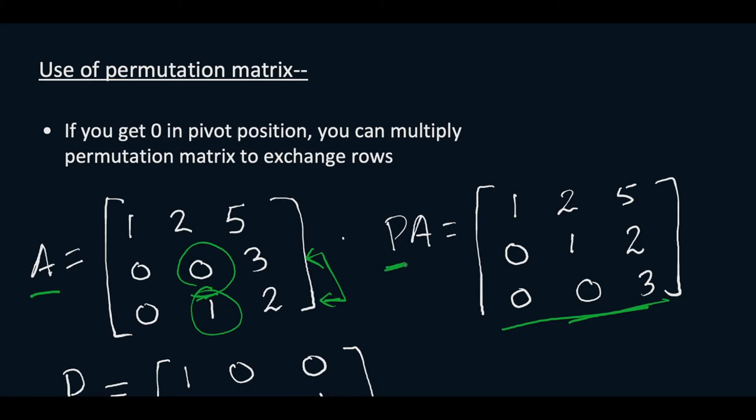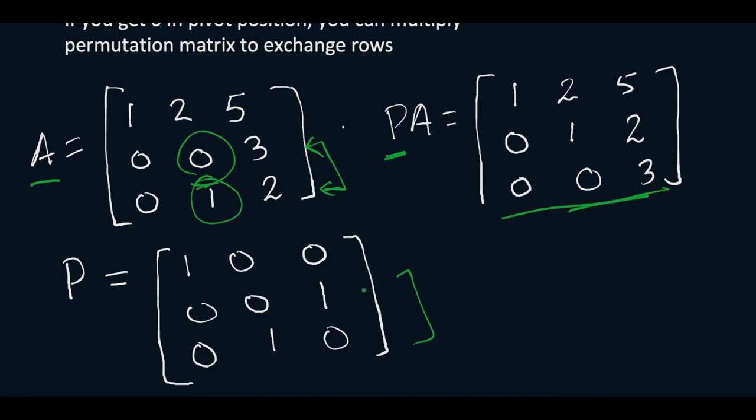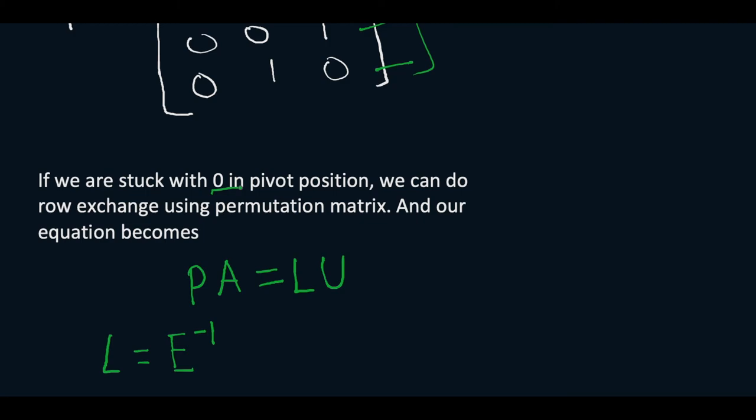So we apply the permutation matrix here. This is our permutation matrix. What it does is it changes row 2 and row 3. So now second row went to the third row and the third row went to the second row. So now we have a perfect U and it has all the three pivots.